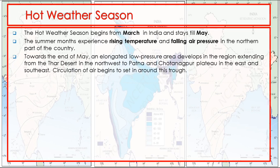Towards the end of May, an elongated low pressure area develops in the region extending from the Thar Desert in the northwest to Patna and Chotanagpur Plateau in the east and southeast. Circulation of air begins to set in around this trough.